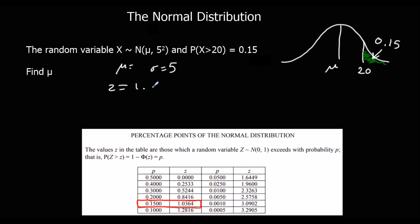So we can substitute in there. So z equals x minus the mean divided by the standard deviation. So 1.0364 equals 20 minus the mean, which we don't know, divided by the standard deviation, which is 5. So we multiply both sides by 5.